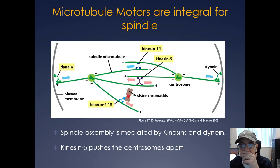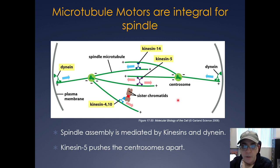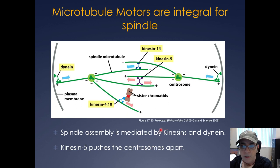The various microtubules and motor proteins are really integral for spindle assembly. You have cytoplasmic dynein, which is a minus-end directed motor; kinesin 14, also a minus-end directed motor; and kinesin 5, which is a plus-end directed motor. These create pulling and pushing forces on the microtubules to position everything properly and get the centrosomes organized for microtubule capture.